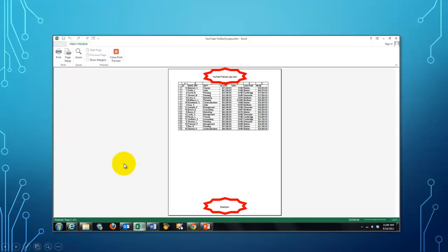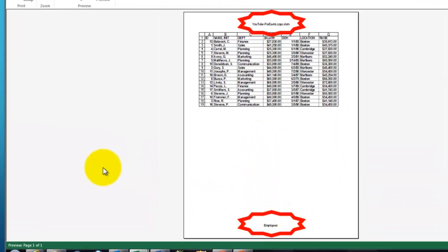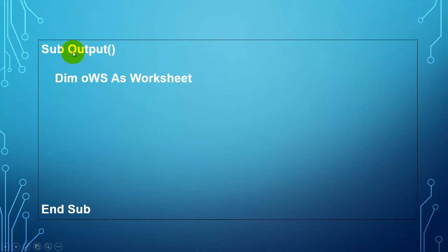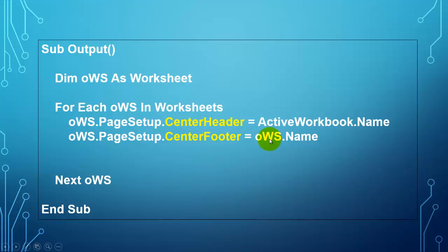Then we are going to create another one that is going to print out all the sheets and it puts on top the name of the file and at the bottom the name of the sheet, as many as there are. I call this one sub output. Declare a variable of the worksheet type, loop through all the worksheets in the collection of worksheets and set the page setup center header to the name of the active workbook. Set the center footer to the name of the particular sheet we are talking to.